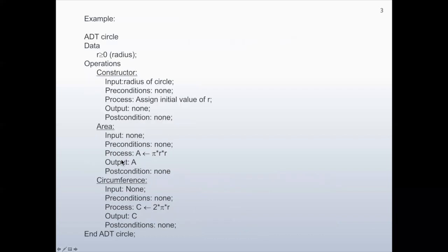For example, consider abstract data type Circle. As data, we have radius, which is greater than or equal to zero. We have operations: constructor, area, and circumference. For the constructor, input is the radius of the circle. There is no precondition. The process is to assign the initial value of R. There is no output and no post-condition.